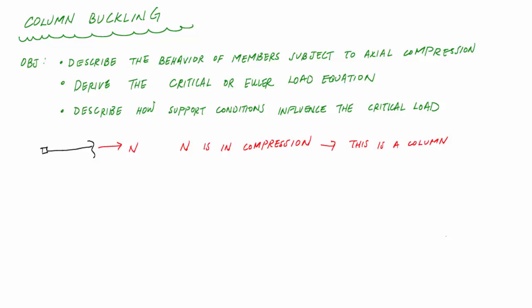We have to pay particular attention to columns because when columns fail, they don't typically yield the material, but rather they buckle. And the reality is when a column buckles, that is a catastrophic failure. You're going to see collapse of structural systems because of the large displacements associated with buckling.